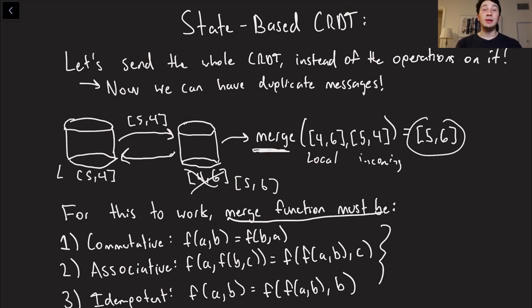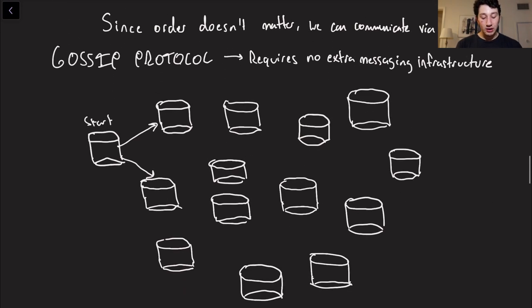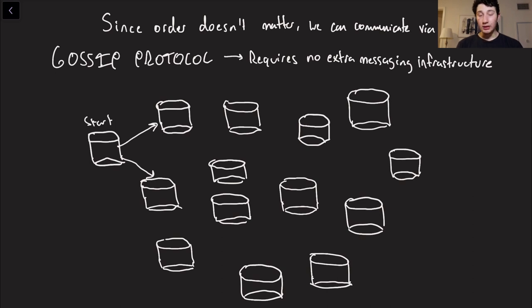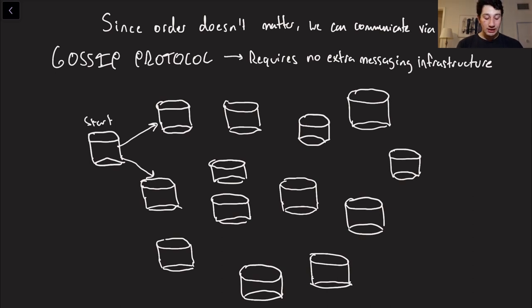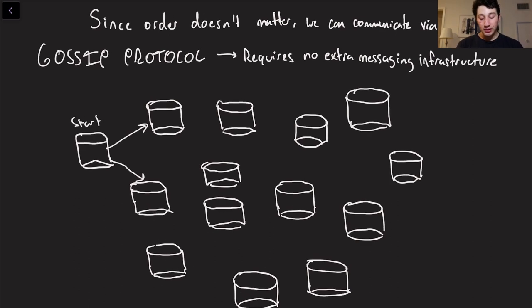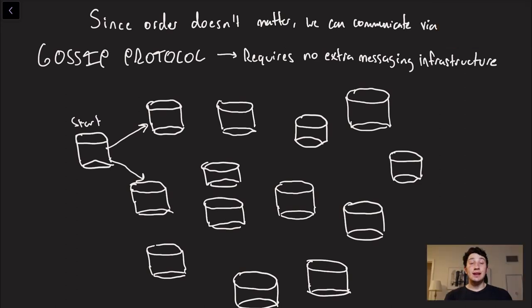And as long as every single node gets them, we'll be eventually consistent. So what does this work really well with? It works really well with something called a gossip protocol. So I haven't explained this yet in this series, but I did definitely explain it in the past one. Basically, the gist of this is that it allows you to really easily communicate with a bunch of nodes in the cluster without any messaging middleware. How do we do this?